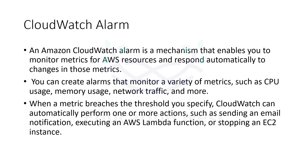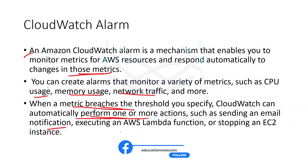CloudWatch alarm is a mechanism that enables you to monitor metrics for AWS resources. You can receive notifications for specific metrics that you have defined. You can set thresholds for metrics such as CPU usage, memory usage, network traffic, storage space, etc. When the metrics are breached, you can automatically perform one or more actions — sending an email notification, executing a Lambda function, or stopping an EC2 instance. You can set alarms using the management console, programming, or command line interfaces.